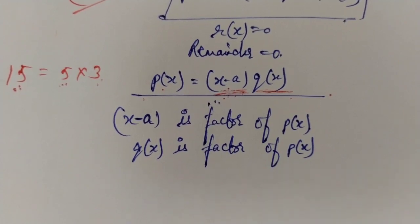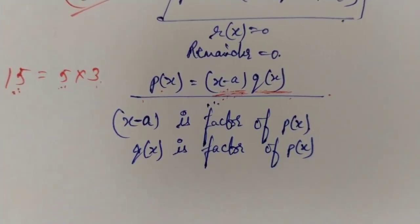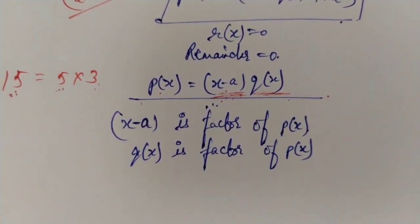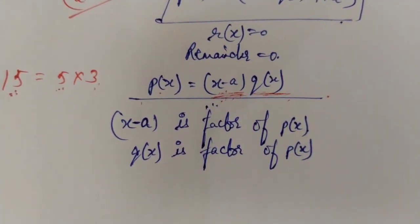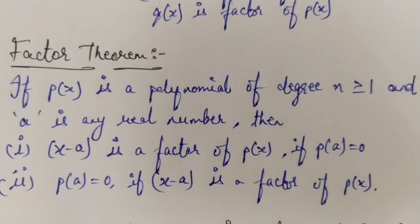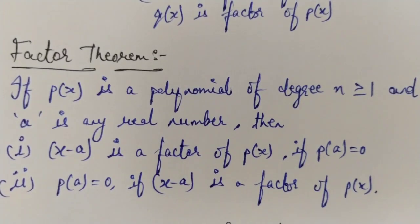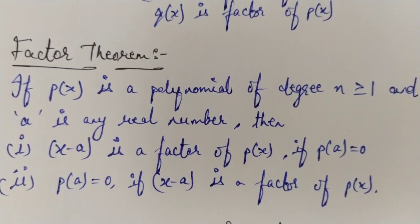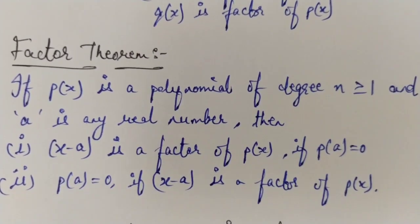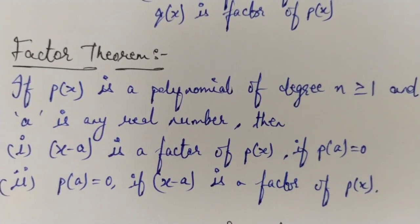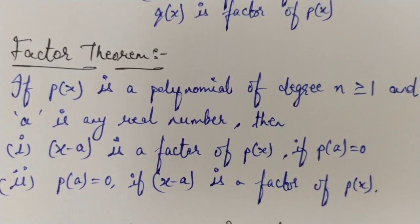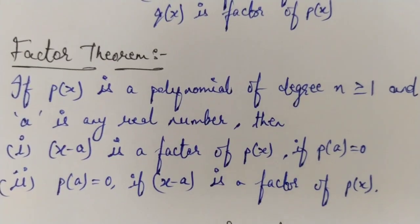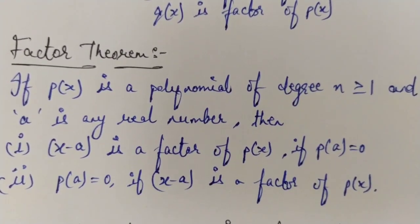Understanding this, I am now going to write the standard definition of the factor theorem, and the definition will be clear to you right away because the manual explanation has already been given above. The factor theorem states: if p(x) is a polynomial of degree n greater than or equal to 1, and a is any real number, then x minus a is a factor of p(x) if and only if p(a) equals zero.